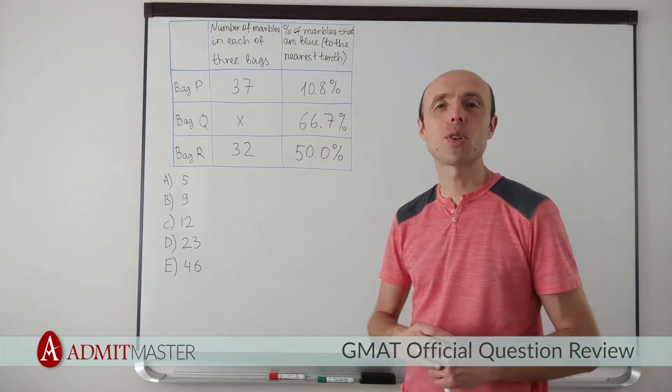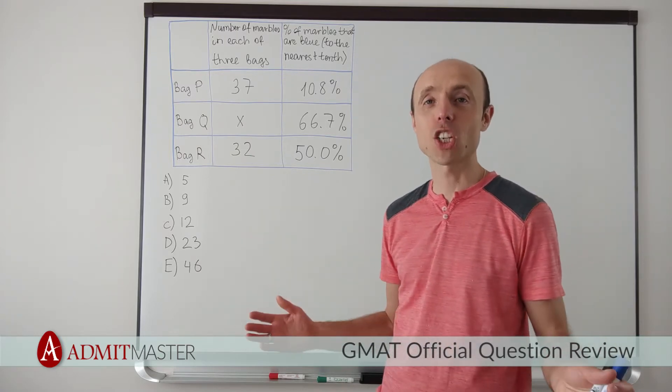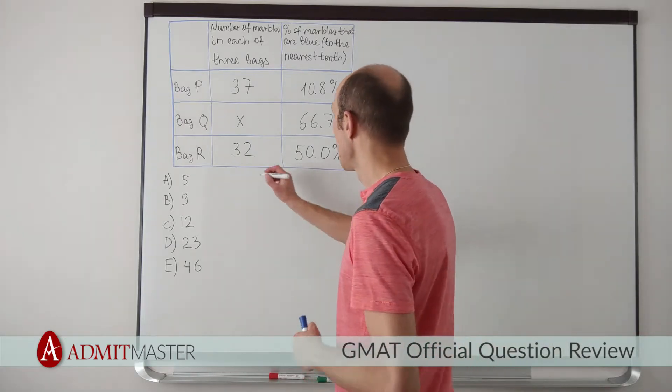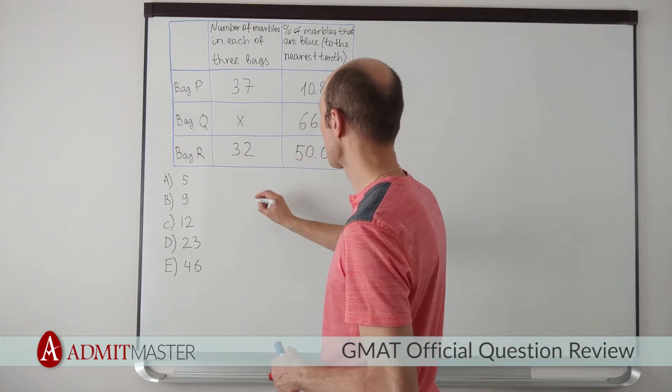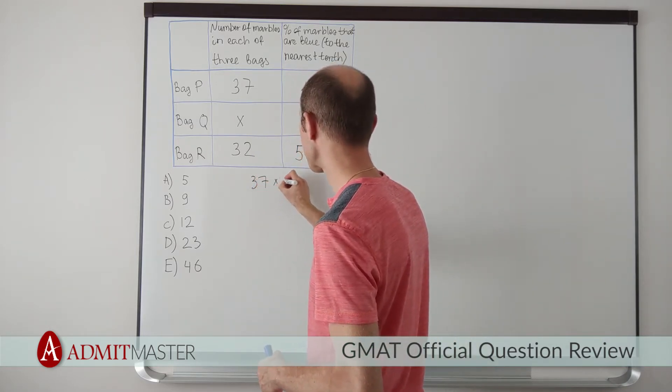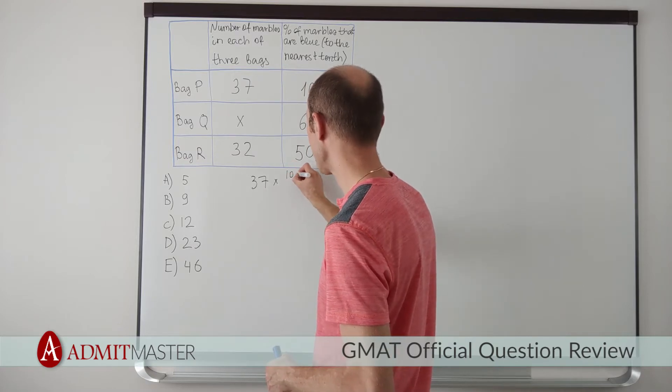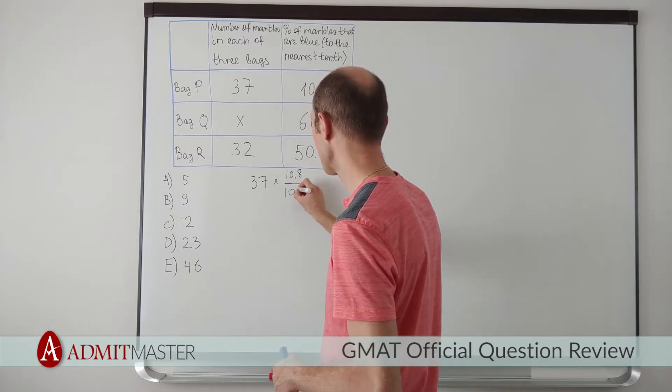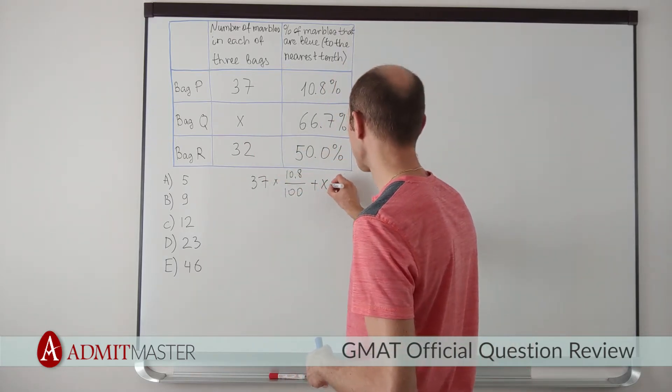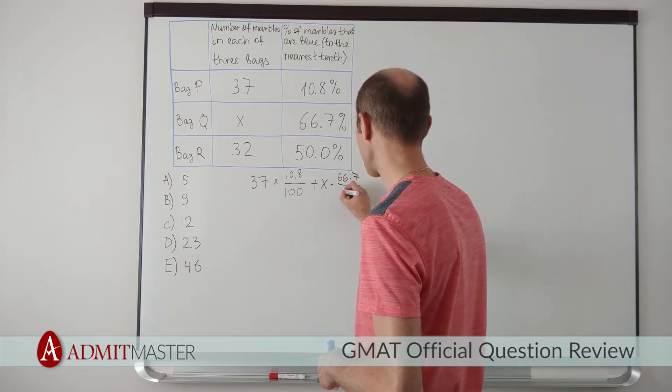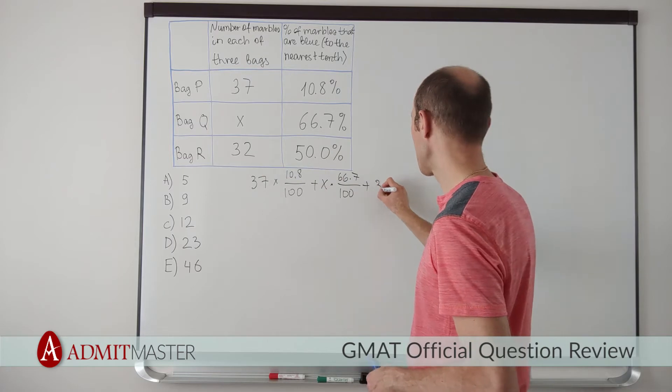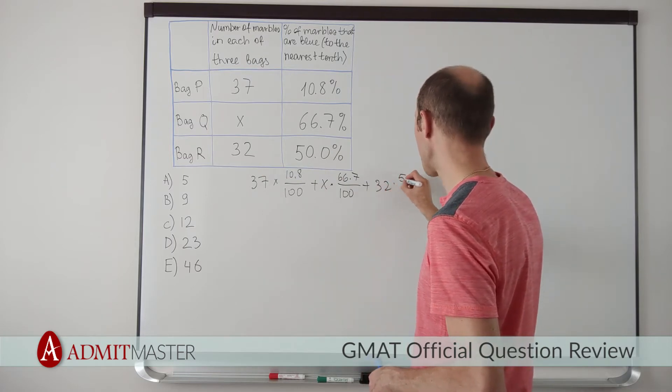Now, what most people are going to do at this point is build an equation in order to find x. So let's see how this equation is going to work. 37, which is the number of marbles in bag P, times 10.8%, so 10.8 divided by 100, plus x times 66.7 divided by 100,